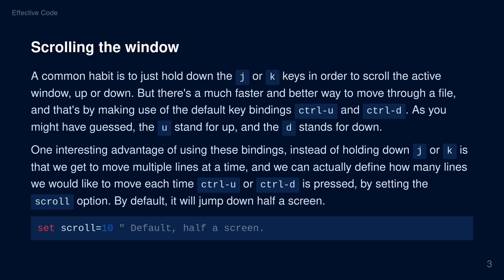1. Scrolling the window. A common habit is to just hold down the J and K keys in order to scroll the active window up or down. But there's a much faster and better way to move through a file, and that's by making use of the default key bindings Ctrl-U and Ctrl-D.